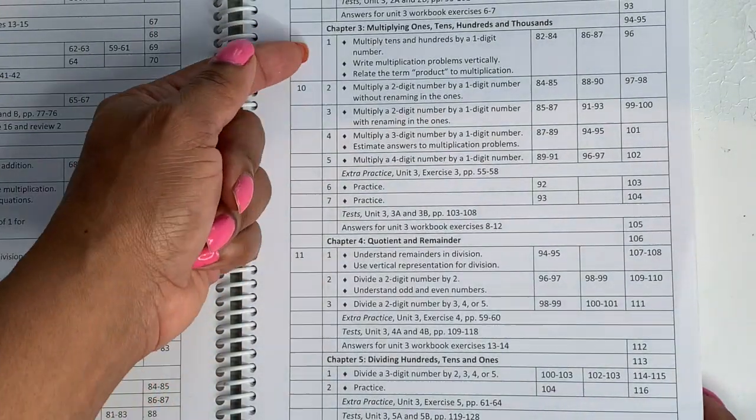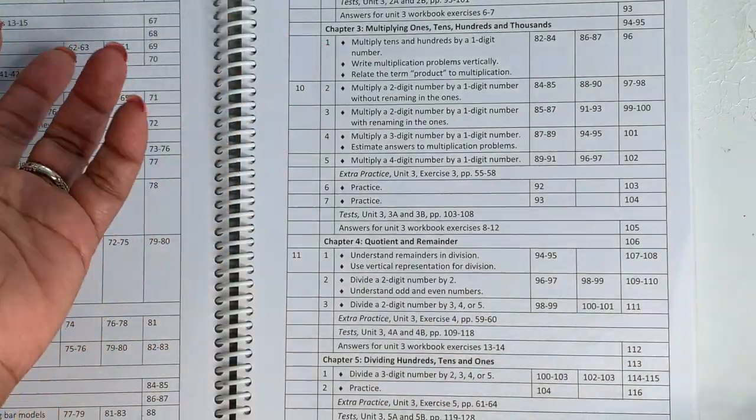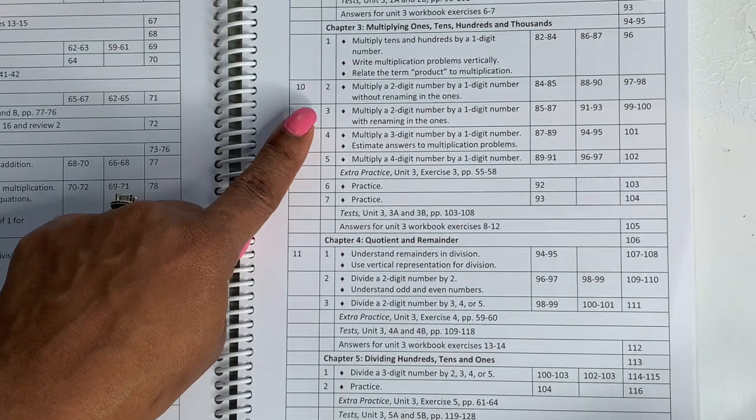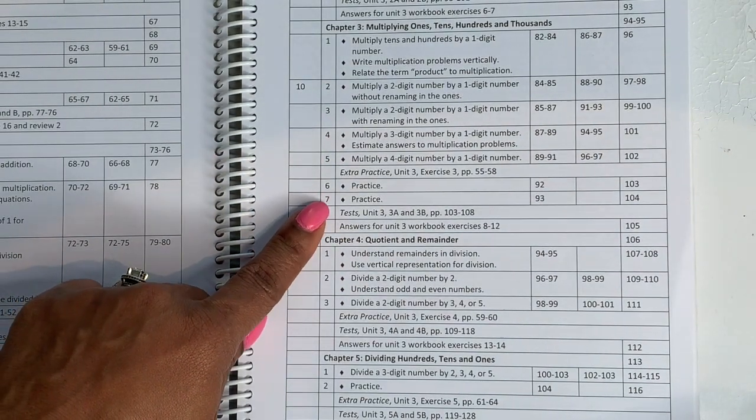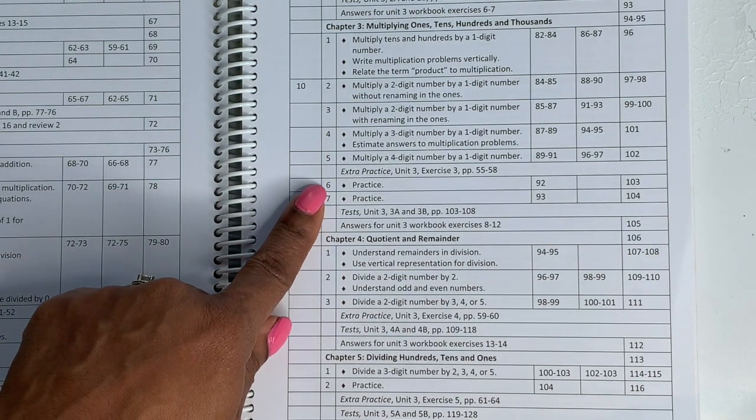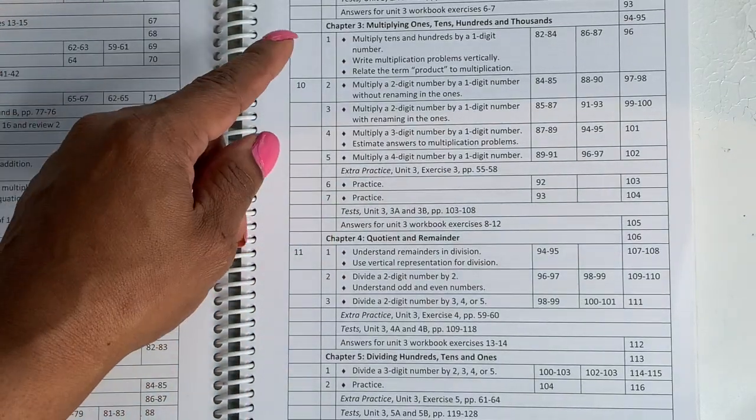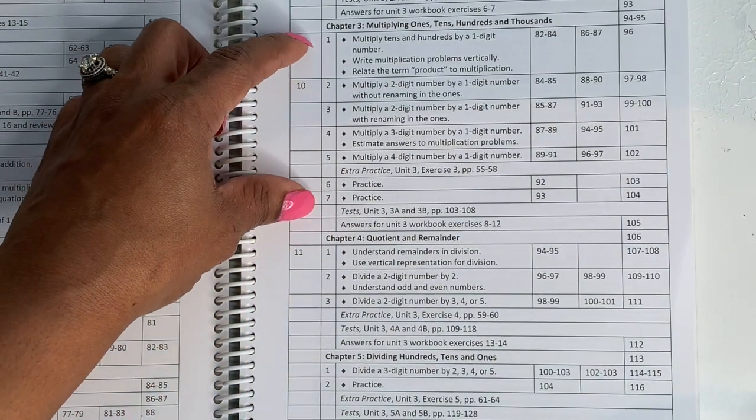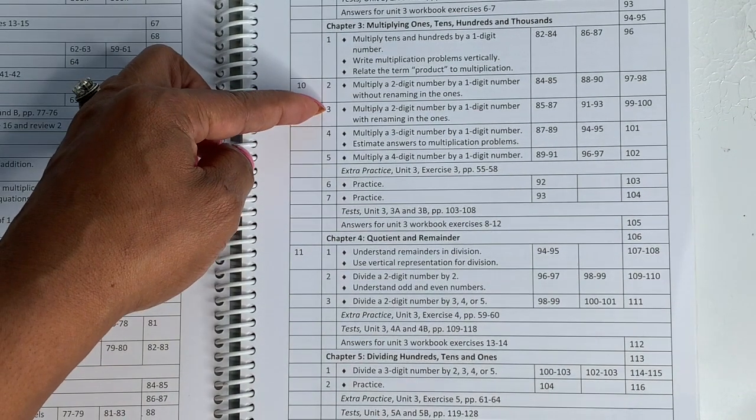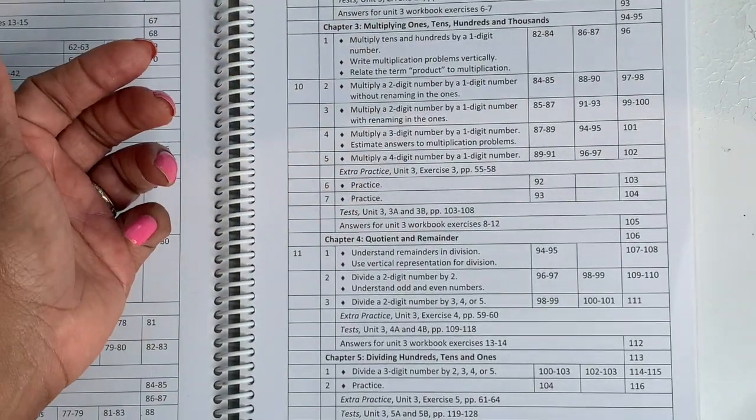Looking back, you have your review and then you go into word problems and then multiplying ones, tens, hundreds, thousands. Again, if you'll notice now, look how these numbers change. Let's just pretend that one is Monday. So Monday, Tuesday, Wednesday, Thursday, Friday, and then six and seven. Now you can break that up as seven days. And then the next day, six starts as Monday or Tuesday, or you can decide, well, I want to do all of this in one week. So maybe I do one and two on Monday. This is Tuesday, Wednesday, Thursday, and then these two on Friday. You can break this up any way you want to.